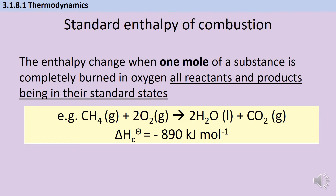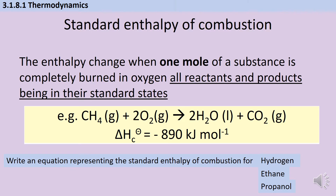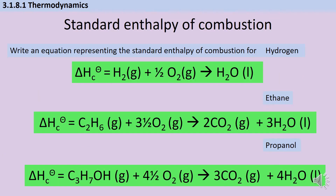Here's an example equation for methane: note that we have one mole of methane and that we're making carbon dioxide, not carbon monoxide. Can you write an equation representing the standard enthalpy of combustion for hydrogen, ethane, and propanol? The one thing to watch out for is that if you're used to doubling up equations to remove halves, we can't do that here because we must be burning one mole.